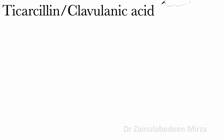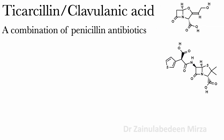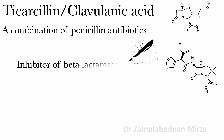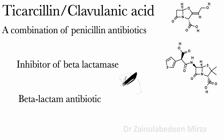Ticarcillin-clavulanic acid is a combination of penicillin antibiotics. Clavulanic acid is a potent inhibitor of beta-lactamase, and ticarcillin is a potent anti-pseudomonal penicillin, a beta-lactam antibiotic.